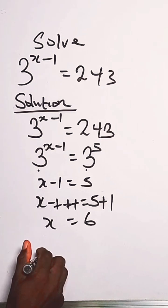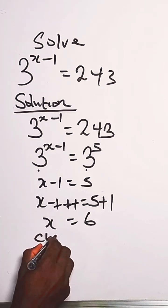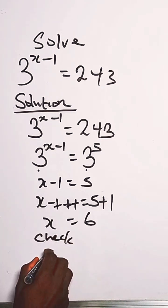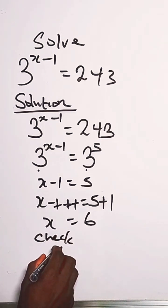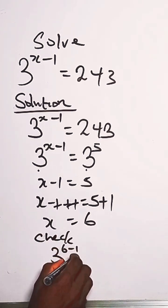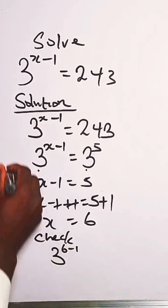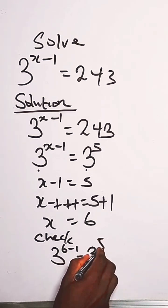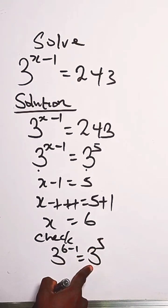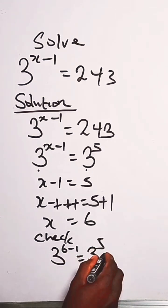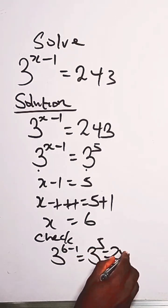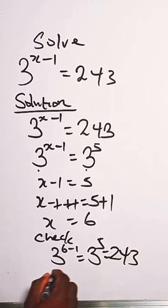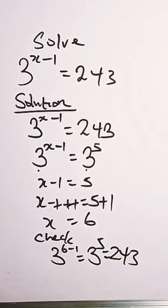When we check this, 3 raised to the power 6 minus 1, which is the value of x, gives us 3 raised to the power 5, which is equivalent to 243. Thank you very much.